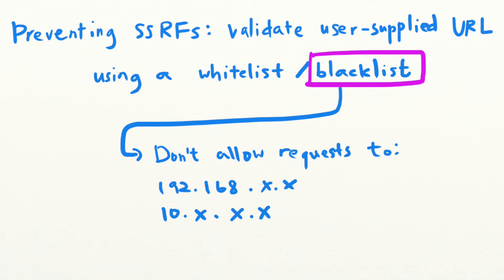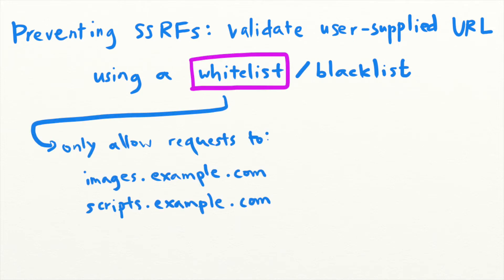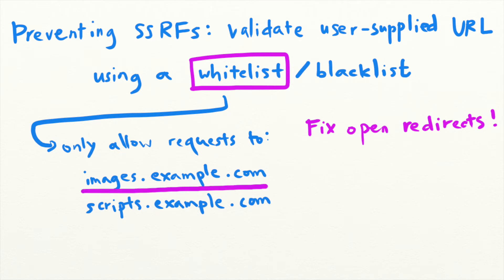Whether you're using a whitelist or a blacklist, here are some tips to help you implement them correctly. First, if you're using a whitelist, make sure that you fix open redirect vulnerabilities within the whitelisted domains. If attackers find an open redirect within a whitelisted domain, they can request a whitelisted URL that redirects to a restricted internal URL instead.